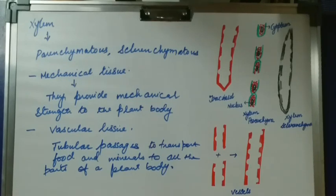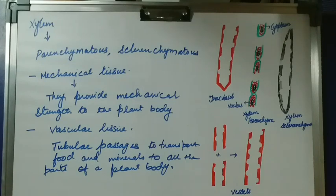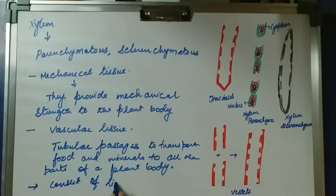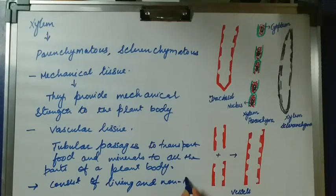Xylem consists of living as well as non-living cells. Among its four elements, three are made up of dead cells and only one — the xylem parenchyma — is made up of living cells. That is why xylem is considered to consist of both living and non-living cells.